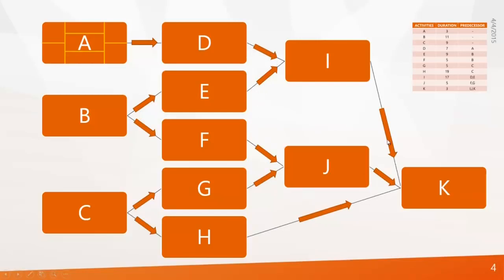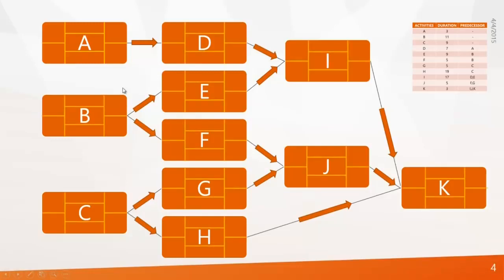The next step is to assign duration to each activity. In a real-time scenario, experienced planners and civil engineers decide the duration of every single activity — those can number up to 10,000 to 20,000 or more. Here, Activity A has a duration of 3, B is 11, and C is 9, and so on.